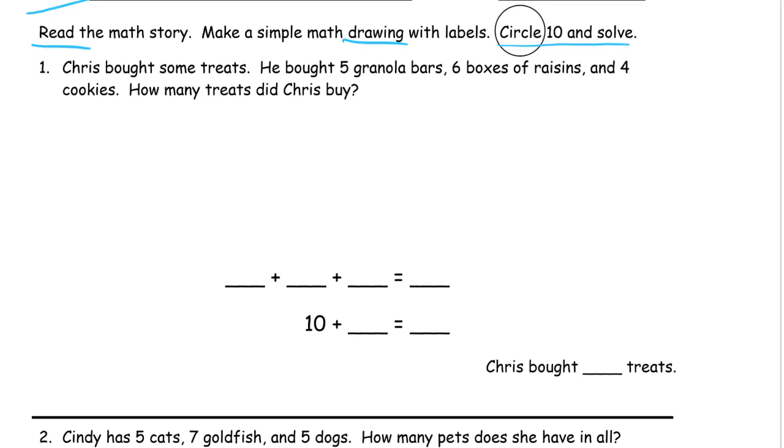Here's our first one. Chris bought some treats. He bought five granola bars, six boxes of raisins, and four cookies. How many treats did he buy? So, five granola bars. One, two, three, four, five.